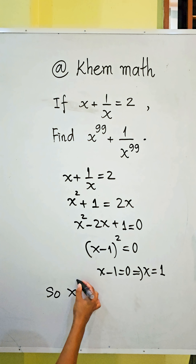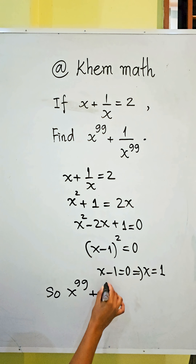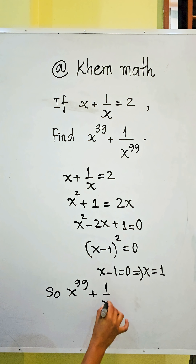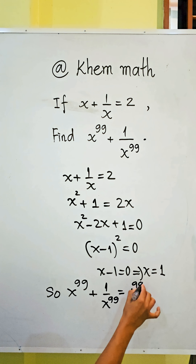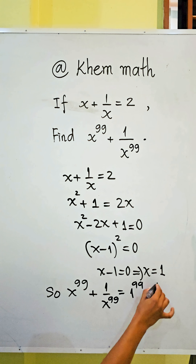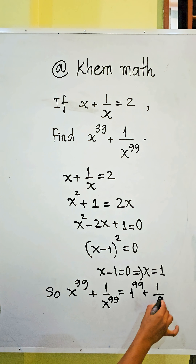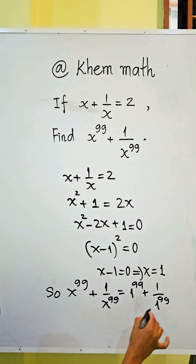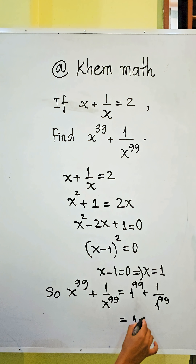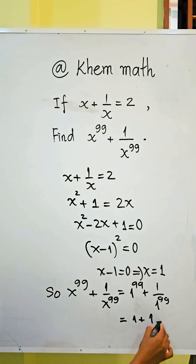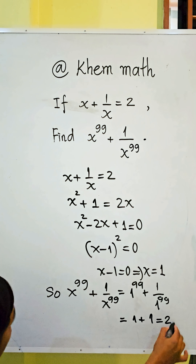Now we substitute h equals 1 into the expression: h to the power 99 plus 1 divided by h to the power 99 equals 1 to the power 99 plus 1 divided by 1 to the power 99, which equals 1 plus 1 divided by 1, so the value of the expression equals 2.